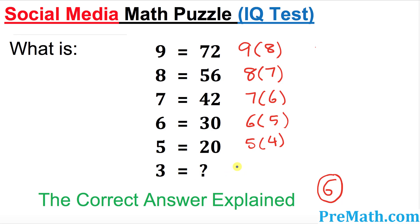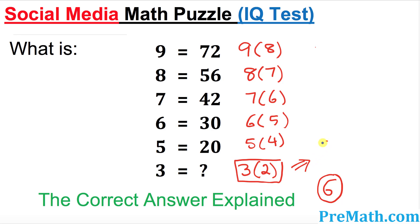3 could be written as 3 times 2, since 1 less than 3 is 2. So 3 times 2 is simply 6. That is our answer. Thanks for watching.